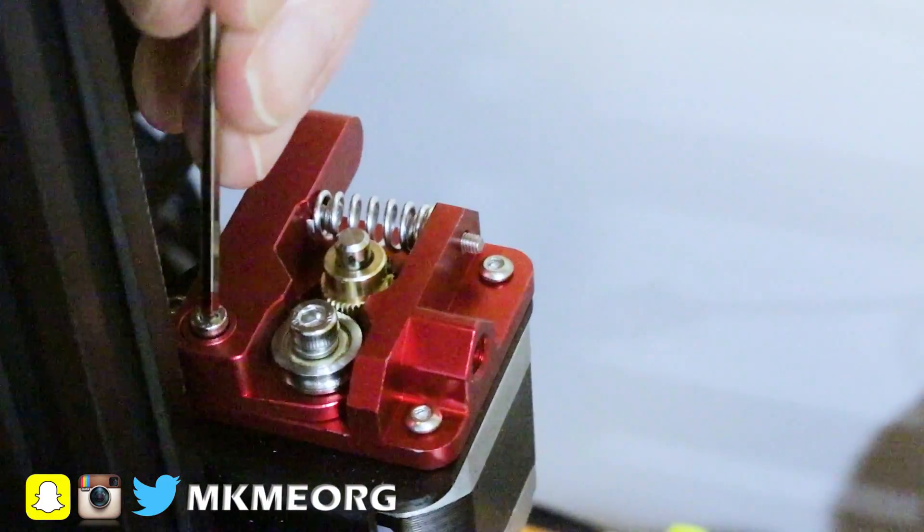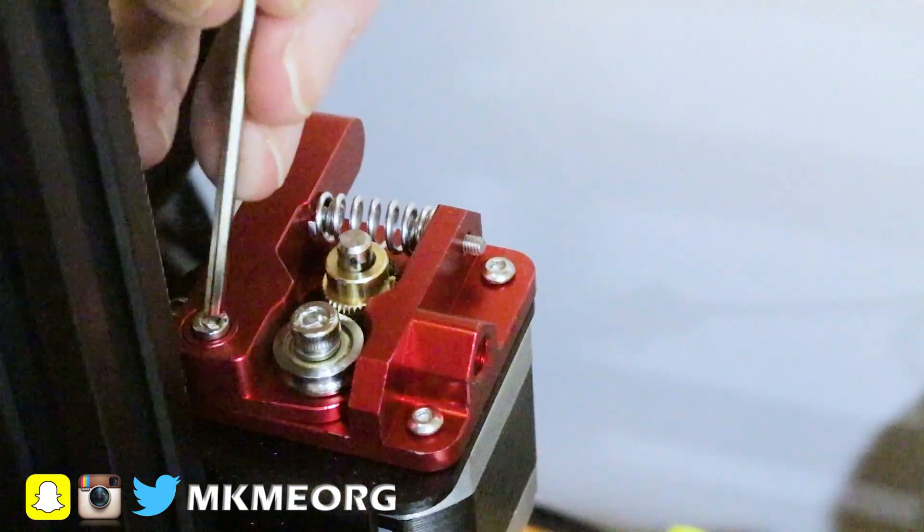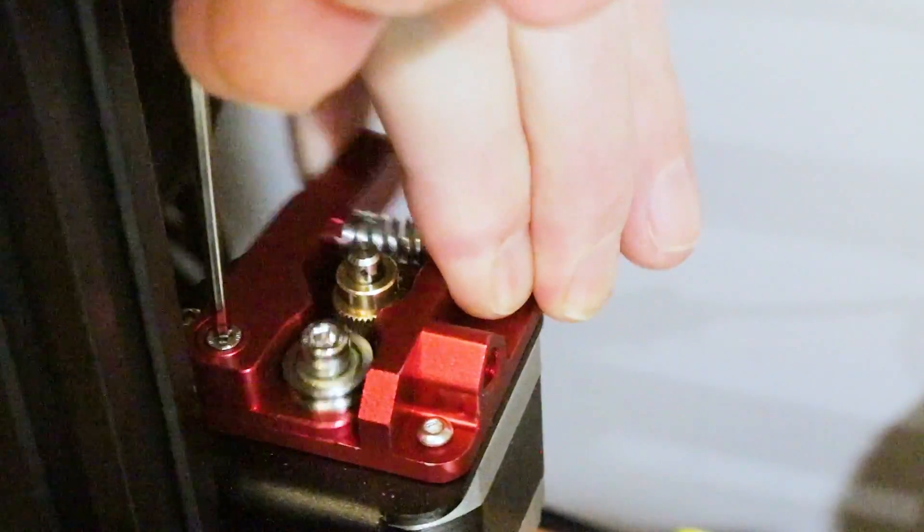Put the swing arm in place and tighten down the screw. It can't be too tight otherwise you might cause binding in the pivot point.